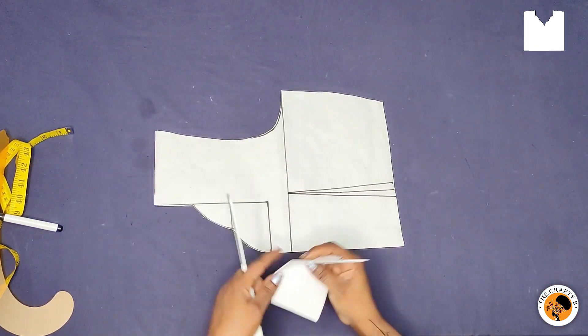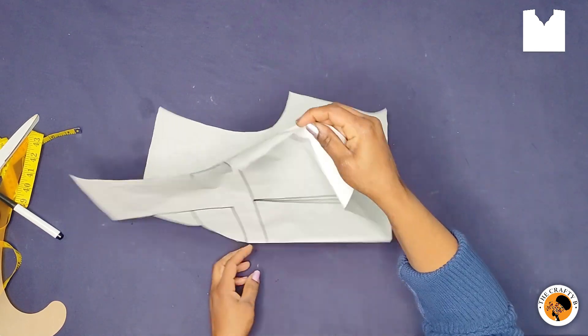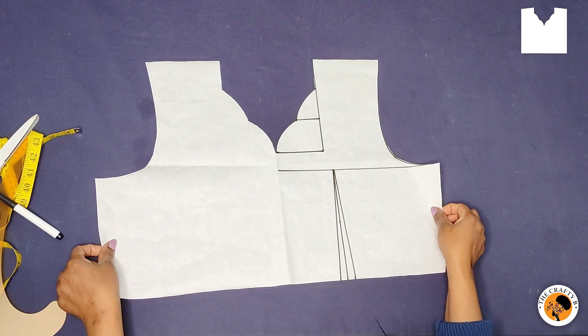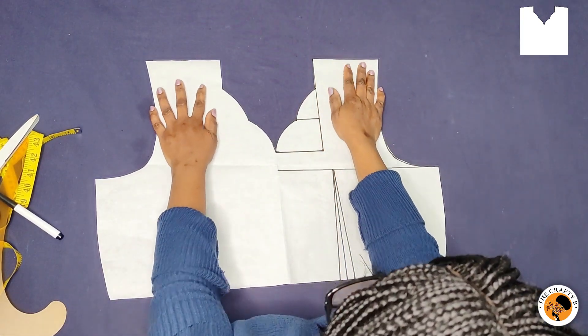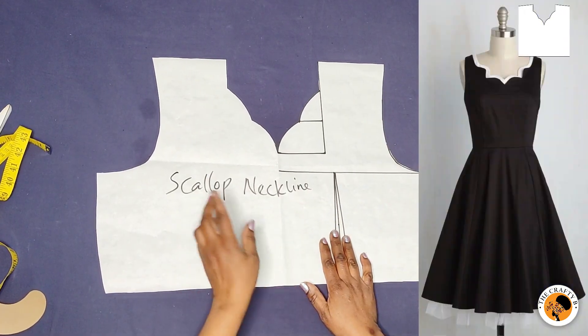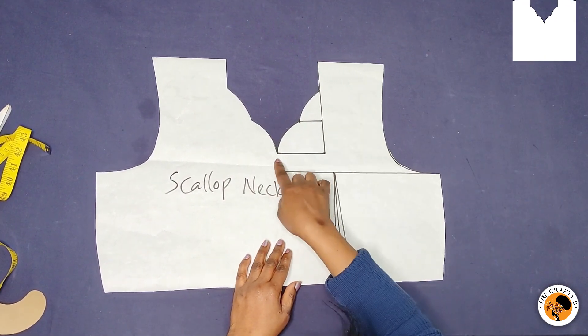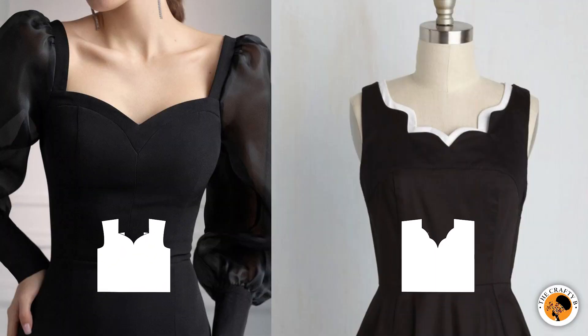So let me open up the pattern to see how it looks. So this is the look after cutting it. Isn't it nice? So this is our scallop neckline. So you see how the neckline is deep. You can even go deeper if you want. So we have come to the end of our neckline.